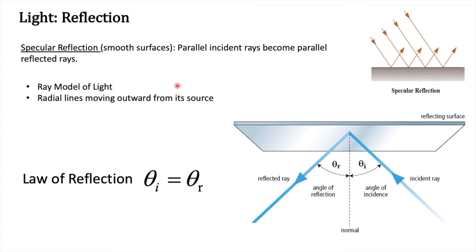Today we'll look at the reflection side of light. When we consider ray models, there is something called specular reflection — reflection from a smooth surface. It comes from the Greek word meaning mirror. We can observe that any parallel light rays, when incident at some angle to a plane, reflect back following a certain law called the law of reflection. Here, theta i is equal to theta r — the angle of incidence is equal to the angle of reflection.